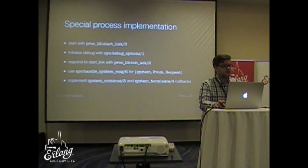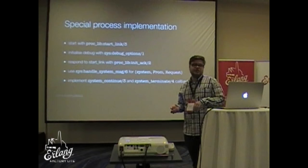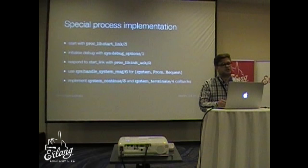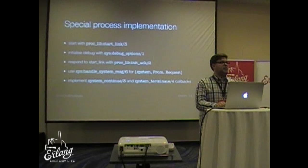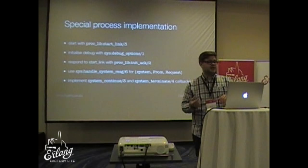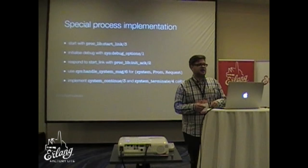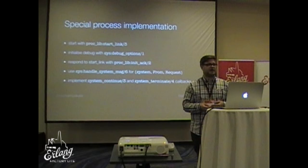How do we implement a special process? There's a lot. First, we need to use the proc_lib module to start our process instead of spawn. We need to initialize the debug options. When we've done our initialization, we respond to start_link with proc_lib init_ack, which makes the start_link function return in the caller. And whenever we receive a message with a tuple of three elements where the first element is the system atom, we need to call sys:handle_system_message — this function does not return; instead it calls back either the system_continue callback or the system_terminate callback on our module. There's a lot of work.